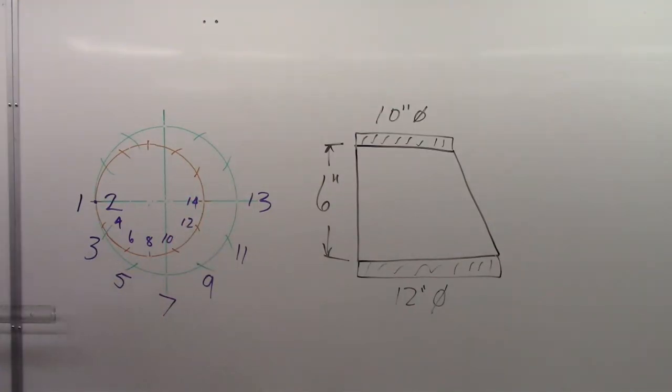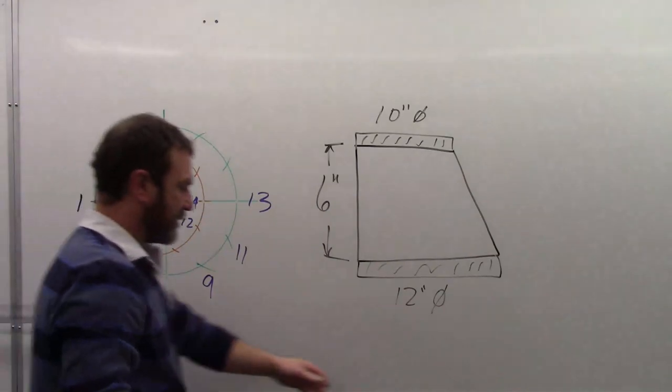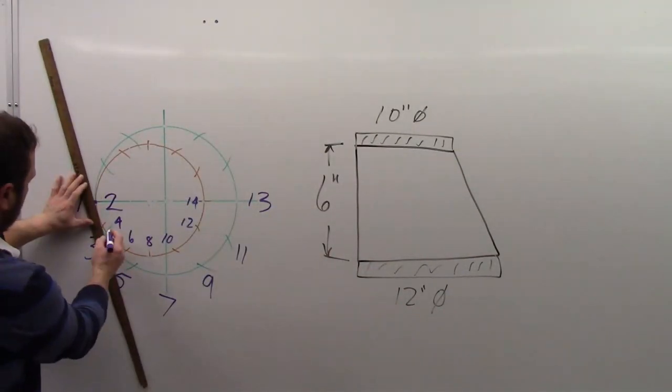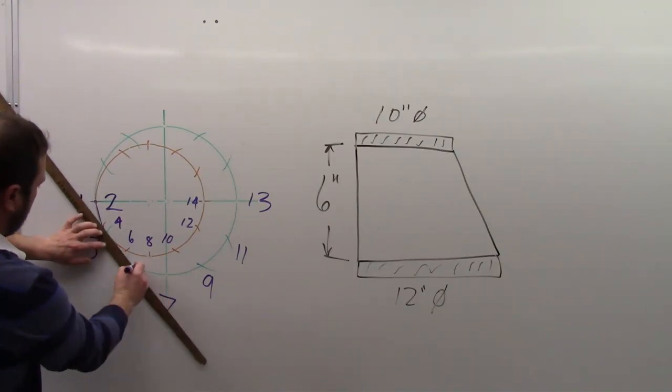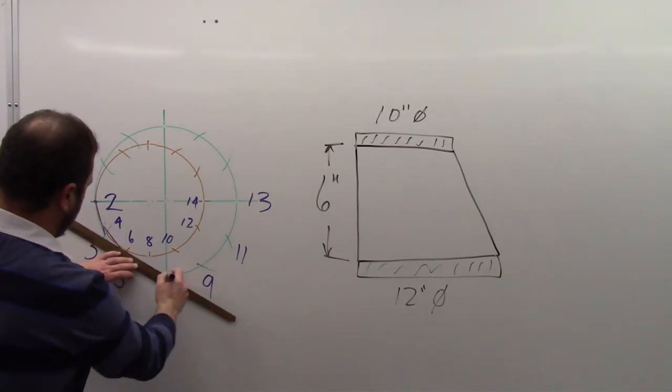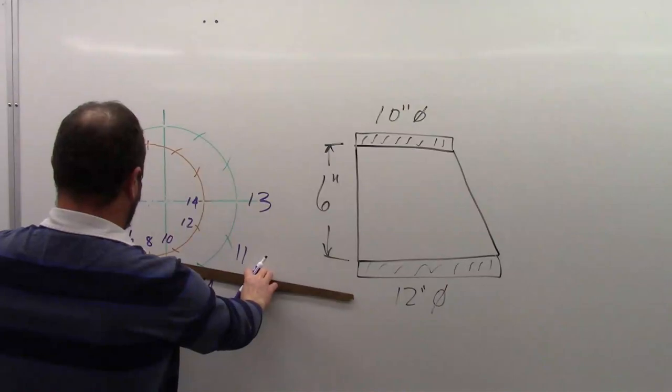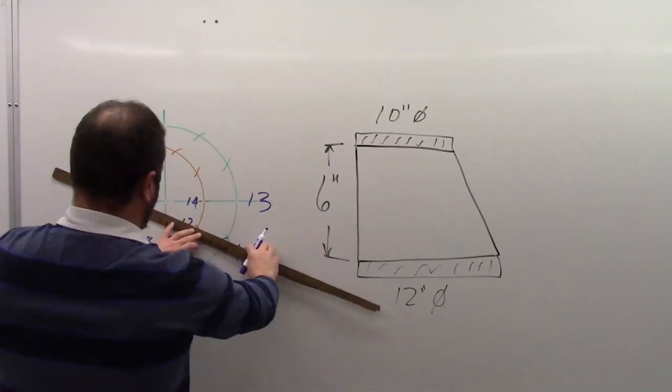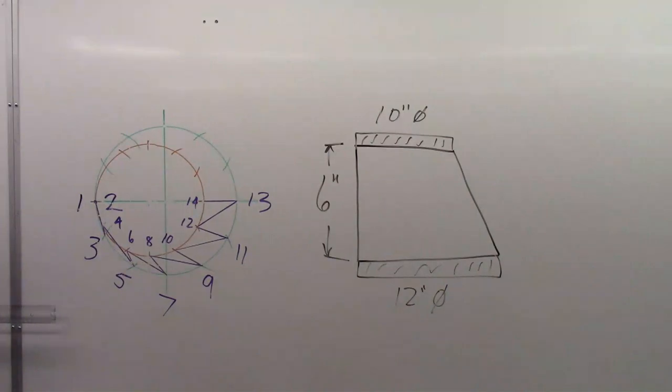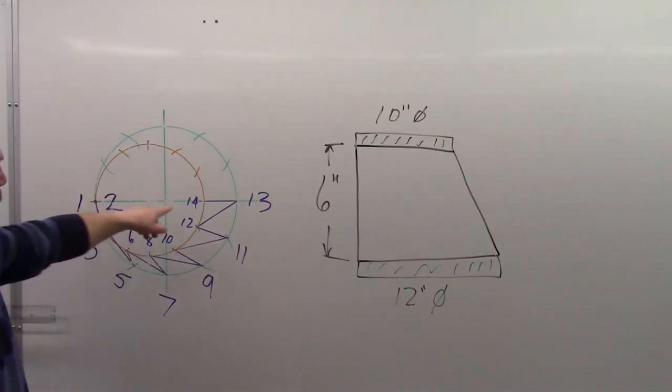Okay, again, I'm going to draw in some of my element lines here just to add some clarity. Okay, there's my plan view now complete. Got my element lines all in, in purple. Got my labeling completed, and I'm zigzagging back and forth, back and forth, from 1 all the way to 14.